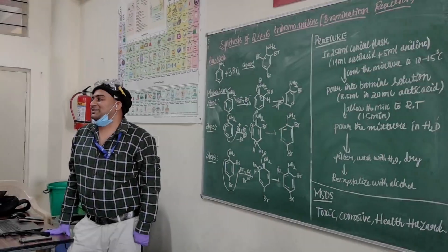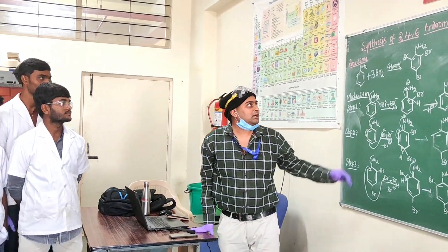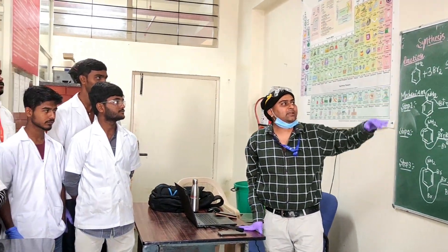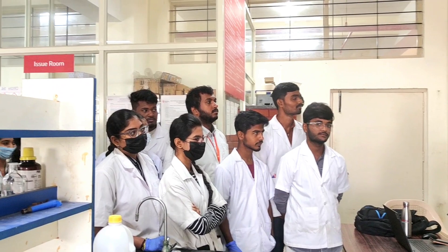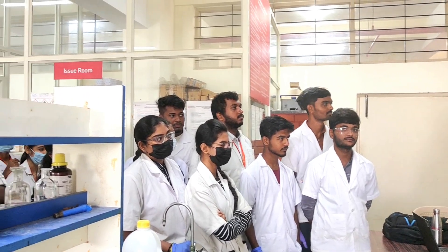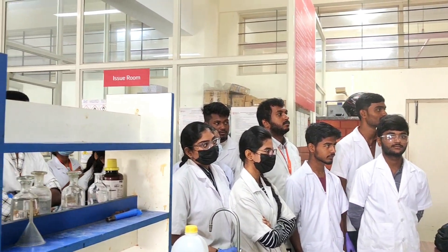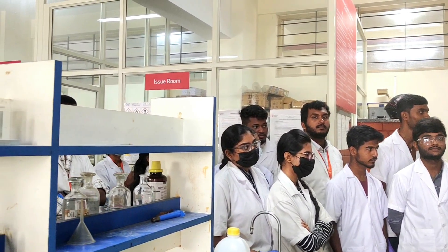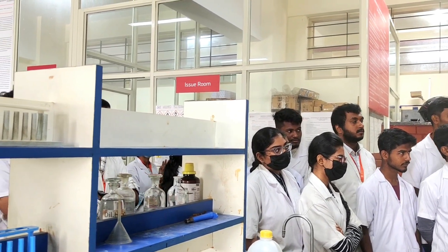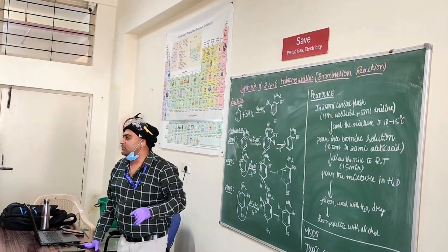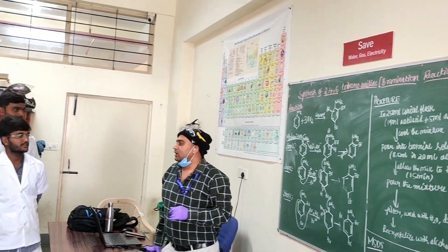Dear students, as your friend mentioned about 2,4,6-tribromoaniline synthesis with the help of bromine and aniline, we are going to synthesize 2,4,6-tribromoaniline. So what kind of reaction are we going to do today? Bromination.